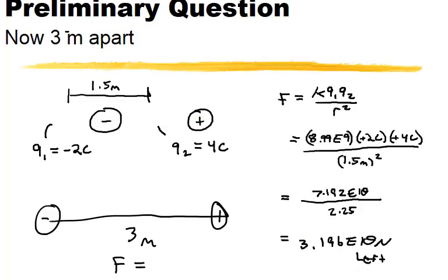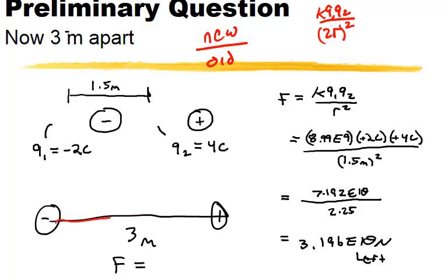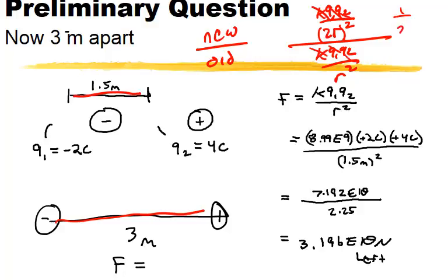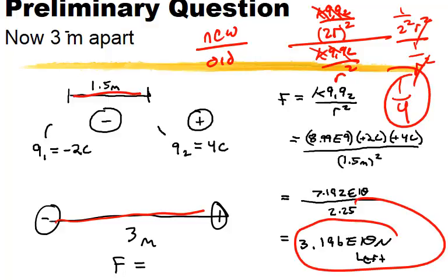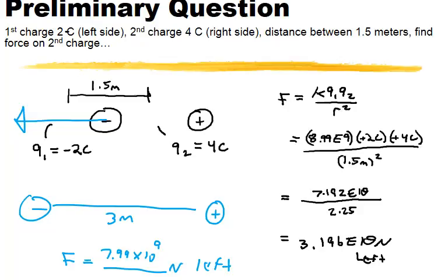What happens if we bring the radius to 3 meters? Instead of working this all the way through again, try the ratio where you look at new over old and see how many times less the force will be. So KQ₁Q₂ / R² — but it's twice the radius squared: 3 meters versus 1.5 meters. The Ks and Qs are the same, and we have 1 over 2²R² over 1/R², so the R squareds cancel. So it's 1/4 as strong, and we take 1/4 of our previous number to get 7.99 × 10⁹ newtons to the left.